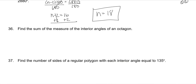Find the sum of interior angles of an octagon. That's 8 sides: (8 minus 2) times 180 equals 6 times 180, which is 1080 degrees.